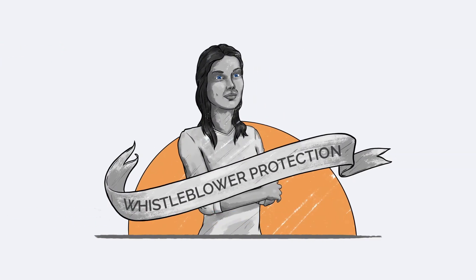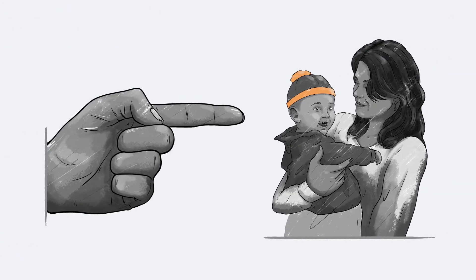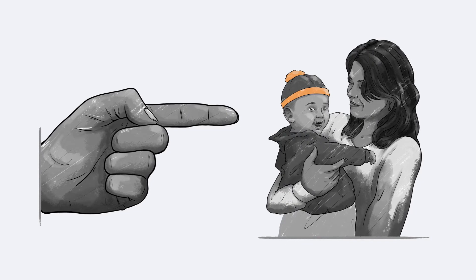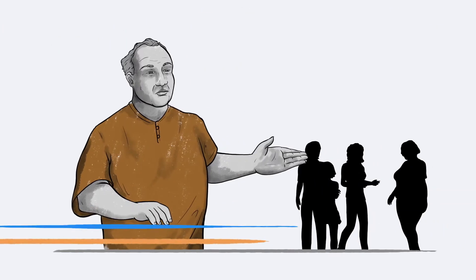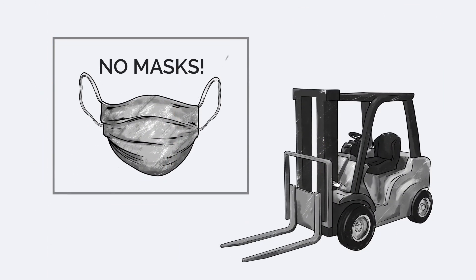This is sometimes called whistleblower protection or retaliation protection. It's also illegal for an employer to fire you for using benefits, like parental leave. The law protects you if you complain about the kind of discrimination we talked about or if you complain about your employer violating a workplace safety rule.